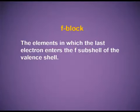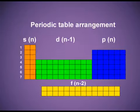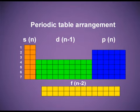The F block elements are those in which the last electron enters the F subshell of the valence shell. There are two series in the F block — the lanthanoids and actinoids. Their electronic configuration is (n-2)f¹⁻¹⁴, (n-1)d⁰⁻¹, ns². From the slide, you can see that the orange colored two groups are the S block, the blue colored six groups are the P block, the 10 groups shown in green are the D block elements, and at the bottom, the two series shown in yellow are the F block elements. In total, there are four blocks in the periodic table depending upon the valence shell electronic configuration.